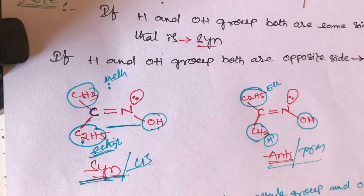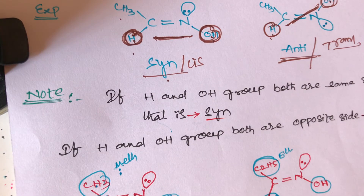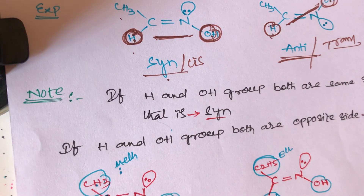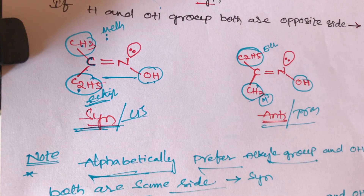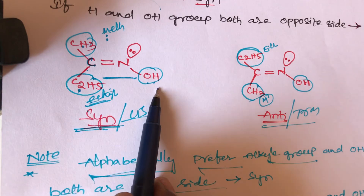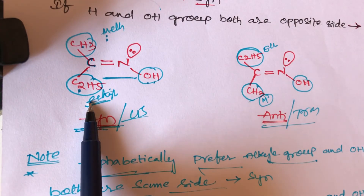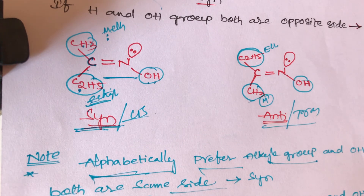Simple trick summary: if hydrogen and OH groups are on the same side = cis or syn; if hydrogen and OH groups are on the opposite side = anti-oxime or trans. For different alkyl groups, follow alphabetical order. Ethyl group and OH group on the same side = syn; ethyl group and OH group on the opposite side = anti or trans.